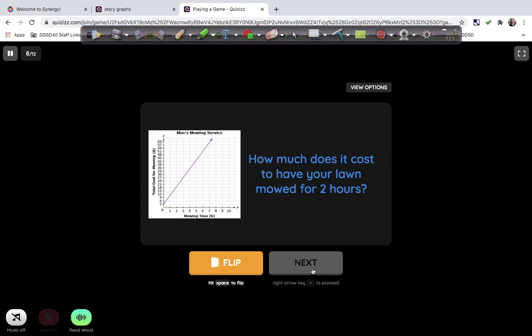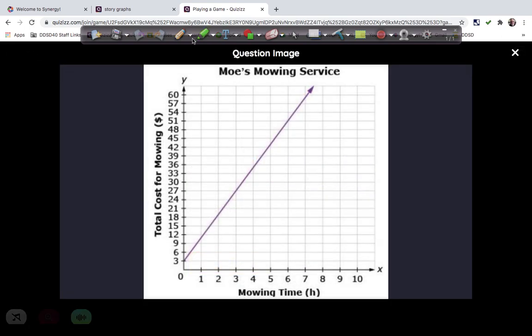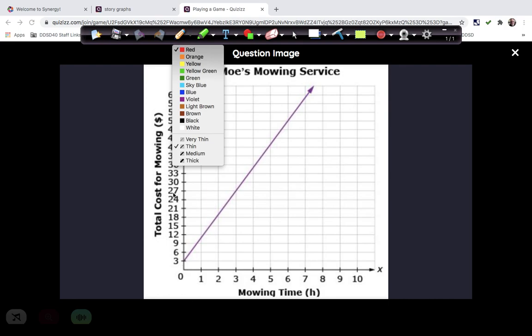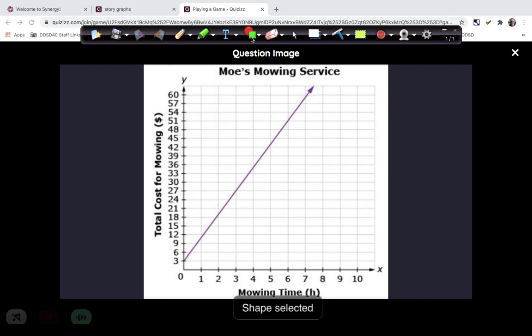How much does it cost to have your lawn mowed for two hours? Oh, this is a good question. So we're going to go to two hours. We're going to use a line tool this time. So we're going to make a line, and we go to two hours, and we go straight up until we meet the line. And then from this point right here, this is an ordered pair, to something. And to figure out what that something is, we go back to our line tool, and we go over here. And it looks like it's a 21, but I might be off a little bit.